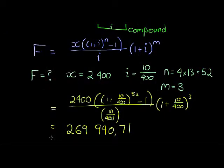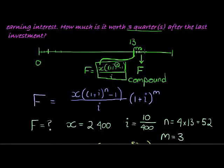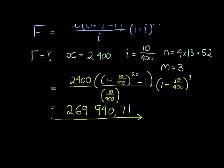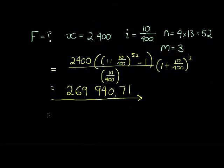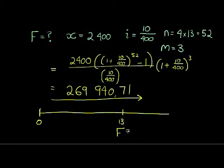That is how much there will be in the bank account at the end of three more time periods after the annuity matured. Another way to do it: work out the future value of the annuity at time 13 first, get that answer, then simply multiply or compound it for another three time periods. That's it — I really don't think that's too difficult. Good luck!